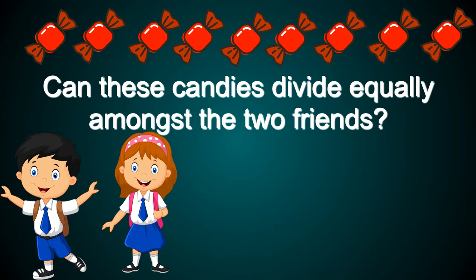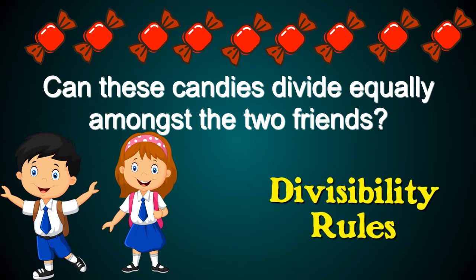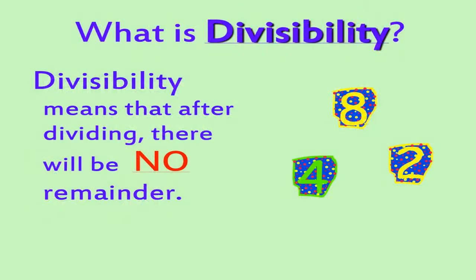This is where the divisibility rules come in. What is divisibility? Divisibility means that after dividing, there will be no remainder. That means that it can be divided evenly.